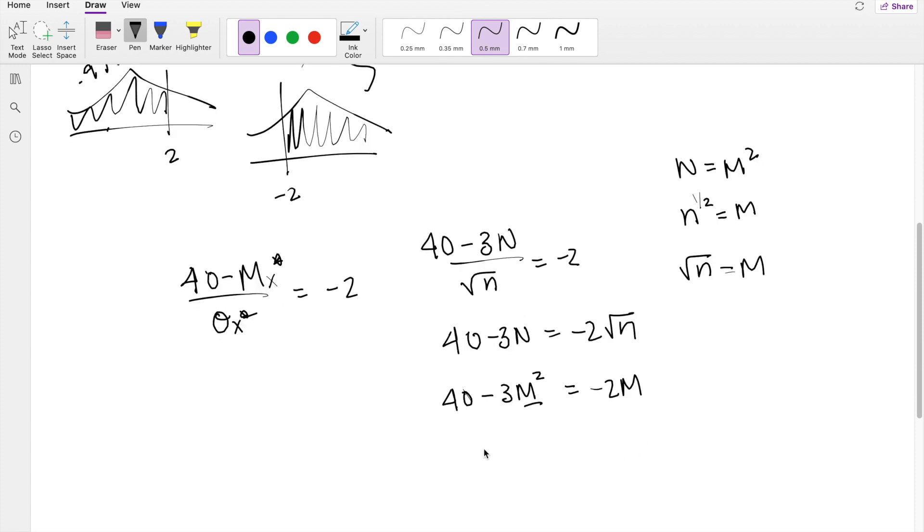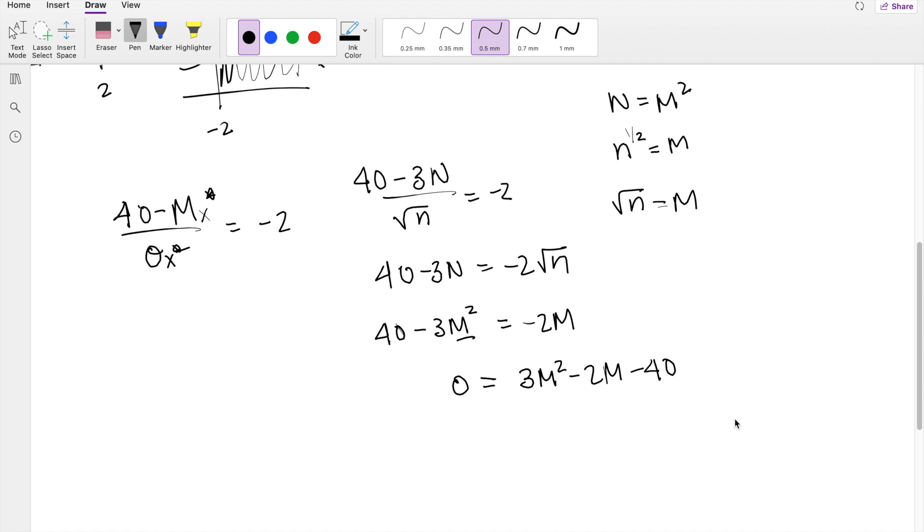Alright, so I'm bringing everything on this side. So you get 0 is equal to 3m squared minus 2m minus 40 equals 0. So this just becomes a quadratic formula.